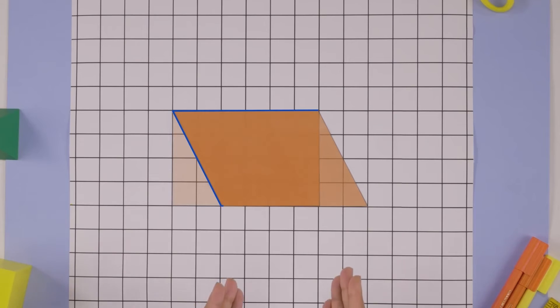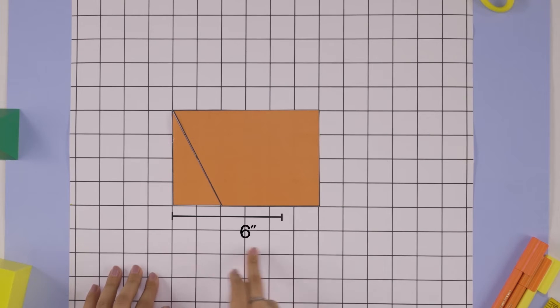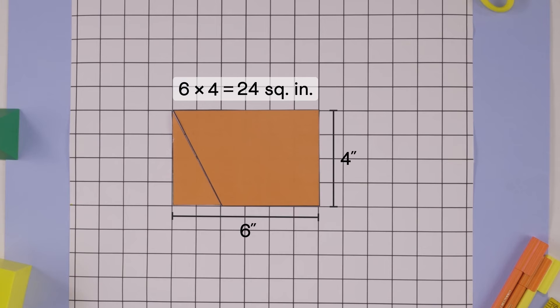This rearrangement doesn't change the area. So the original parallelogram's area must be the same as this rectangle's area, that is 6 times 4 or 24 square inches.